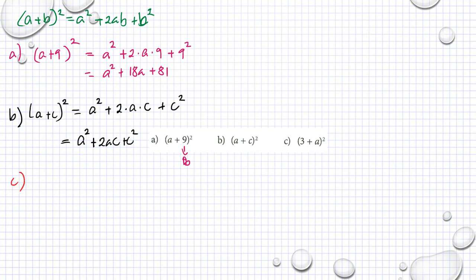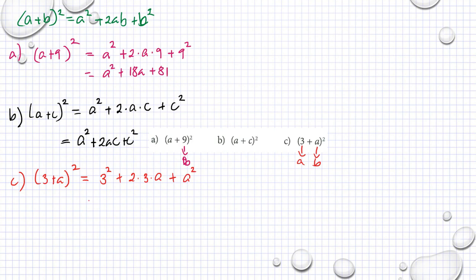Tredje. Så har vi 3 plus A, parentes upphöjt till 2. Så har vi den här som är A, och den här som är B. Ni kan byta platsen på dem men jag rekommenderar inte riktigt. Så har vi 3 upphöjt till 2, plus 2 multiplicerat med A som är 3, multiplicerat med B som är A, plus B upphöjt till 2 som är A upphöjt till 2. Så har vi nio, plus 6A, plus A upphöjt till 2.